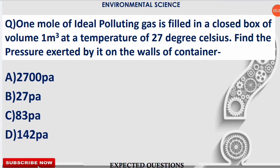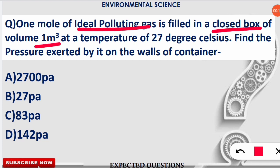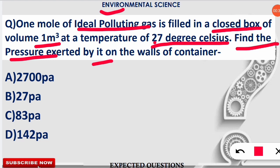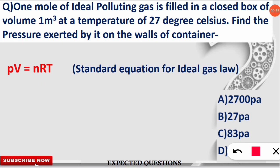Here is a numerical question: one mole of an ideal polluting gas is filled in a closed box of volume 1 m³ at a temperature of 27°C. Find the pressure exerted by the gas on the walls of the container. The gas is described as ideal because it follows the ideal gas law. The standard equation for the ideal gas law is PV = nRT.